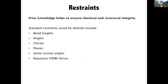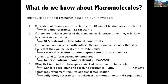We need restraints in order to help ensure chemical and structural integrity. The standard restraints used by default at all resolutions include bond lengths, angles, chirals, planes, torsion angles, and repulsive non-bonded forces, amongst others. In low resolution MX and high resolution cryo-EM we're interested in introducing additional prior knowledge. We can use B-value restraints, which are on by default, and introduce TLS restraints if wanted. If there are multiple copies of the same molecule present, they'll likely be similar, so we'd have NCS restraints — either local, global, or as constraints.